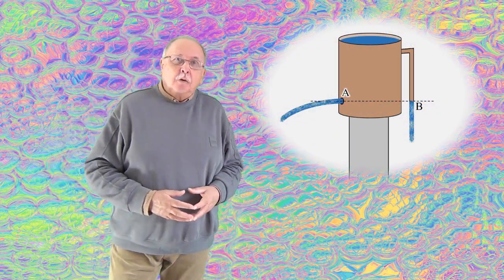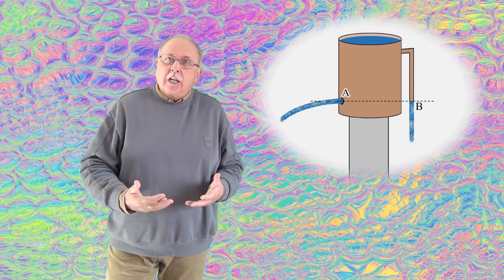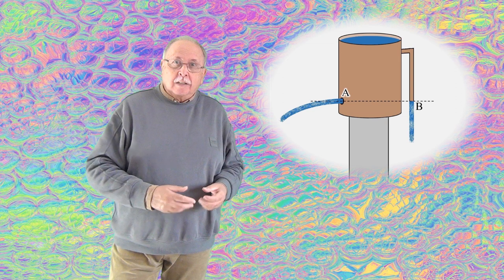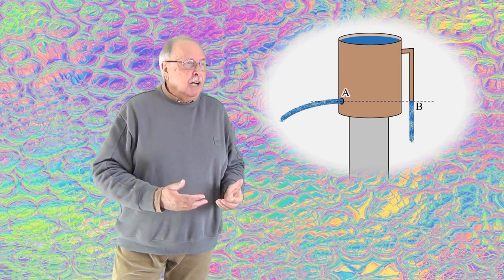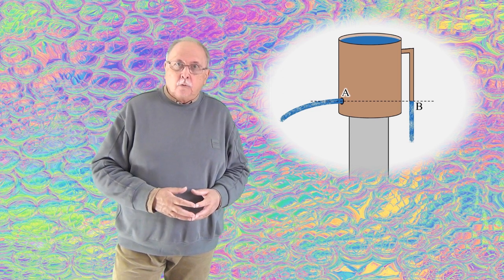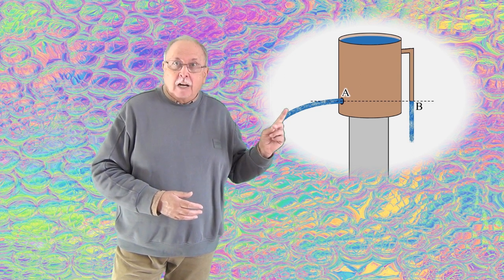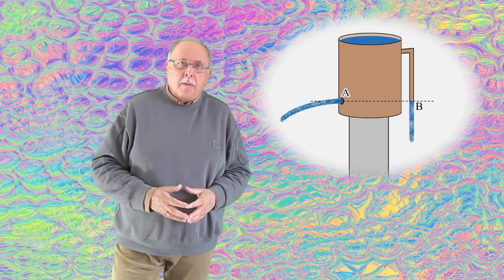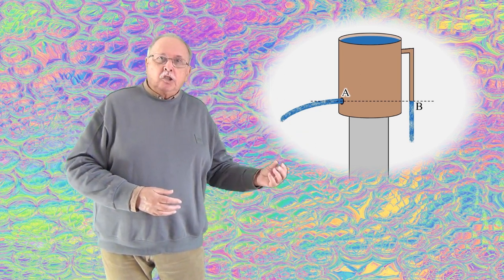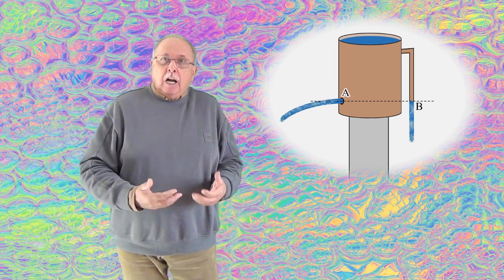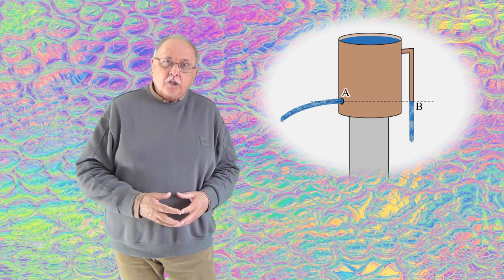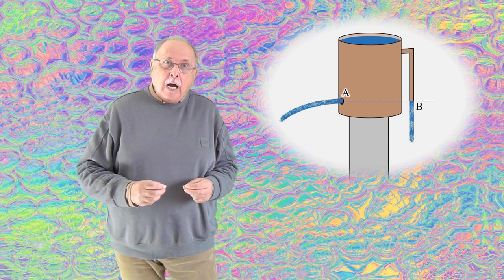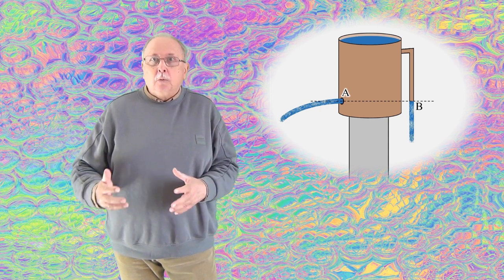Întrebarea de azi este despre un vas din care curge apă, dar nu oricum, ci așa cum vedeți în desen. Este un vas cilindric și apa curge din el prin două locuri. Unul este un orificiu care se găsește aproape de baza vasului și orificiul este notat pe desen cu A, iar celălalt este un tub care comunică cu vasul aproape de suprafața apei din vas, dar sub suprafața apei, altfel n-ar curge apă prin el, și tubul continuă în jos pe lângă vas.